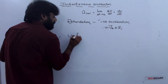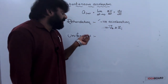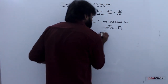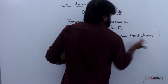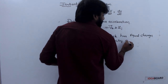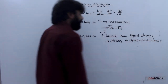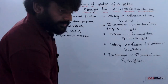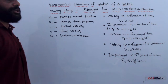Uniform acceleration means the particle has equal changes in velocity in equal intervals of time. Next, kinematical equations of motion of a particle moving along a straight line with uniform acceleration. These kinematical equations are very useful in straight line motion to solve problems.